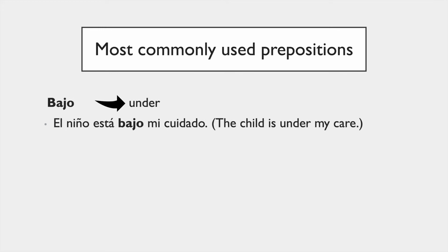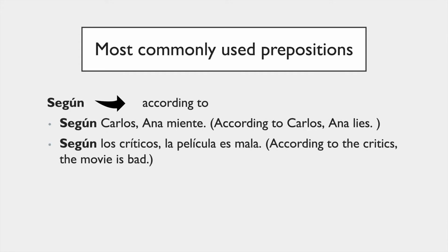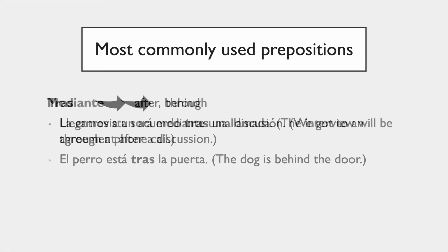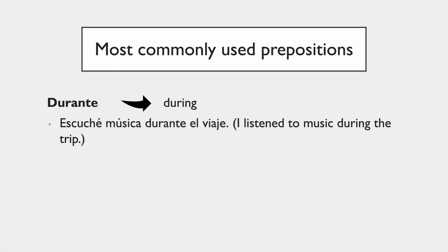'Contra' means 'against'. 'Bajo' means 'under'. 'Ante' means 'before'. 'Según' means 'according to'. 'Tras' means 'after' or 'behind' — look at the context. 'Mediante' means 'through' — this is a more rare preposition. And 'durante' means 'during'.